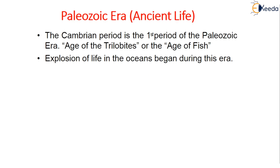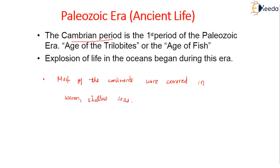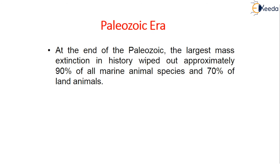Coming to the Paleozoic era, meaning 'ancient life,' the first period is the Cambrian period, also known as the age of trilobites or the age of fish. The explosion of life in the oceans began during this era, and most continents were covered in warm shallow seas. At the end of this era, the largest mass extinction in history wiped out approximately 90% of all marine animal species and 70% of land animals.